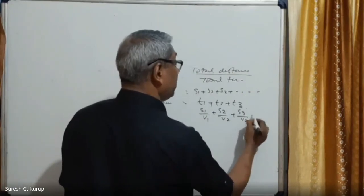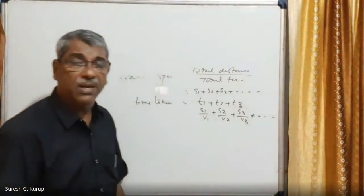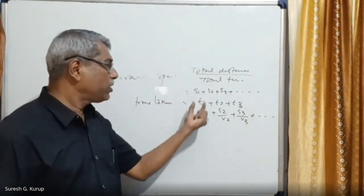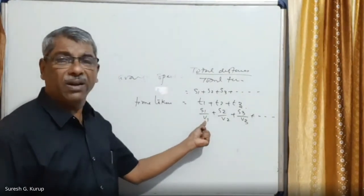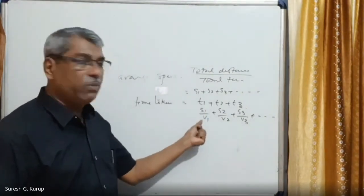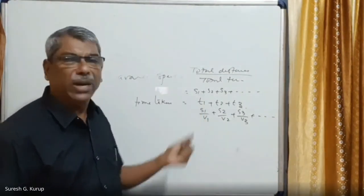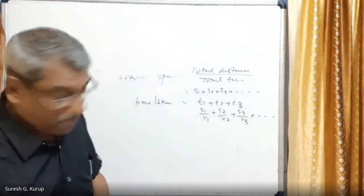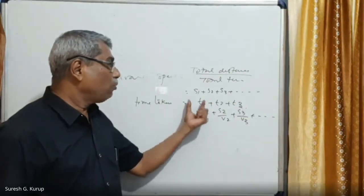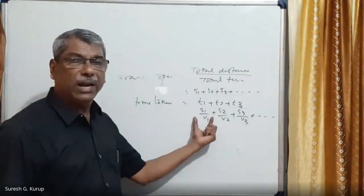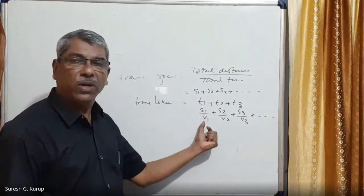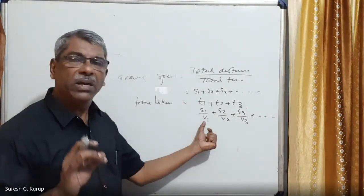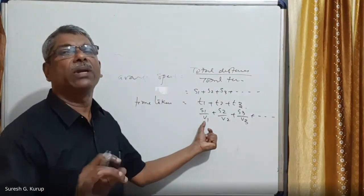The first distance s1 is traveled with speed v1, so the time taken for the first part is t1 = s1/v1. Remember: distance traveled divided by speed equals time taken. So for each segment, time = distance / speed.